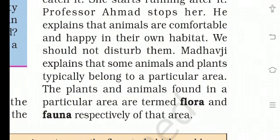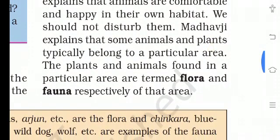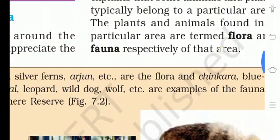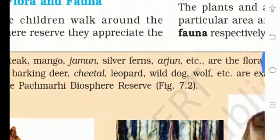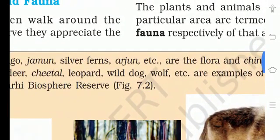Madhu ji explained that some animals and plants typically belong to a particular area. The plants and animals found in a particular area are called flora and fauna respectively of that area. Examples of flora include sal, teak, mango, jamun, silver fern, arjun, etc.